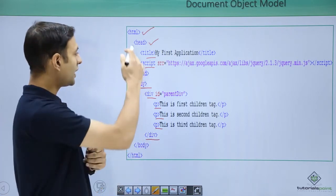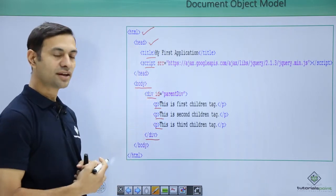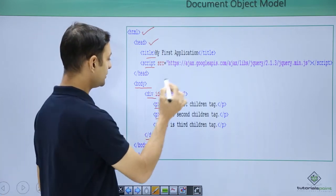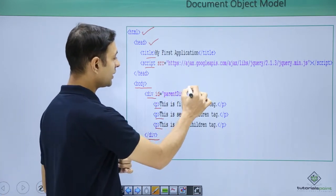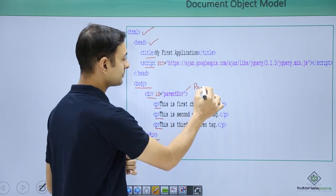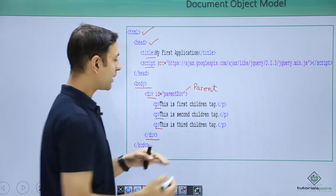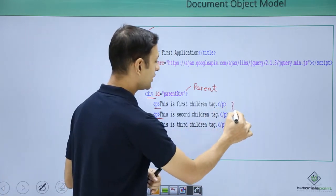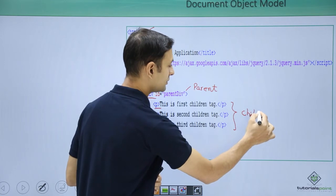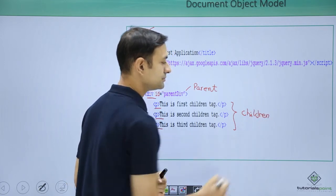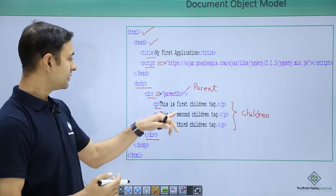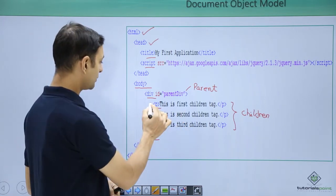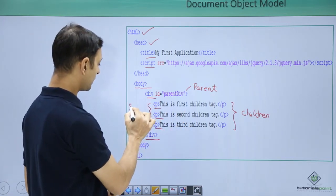So this is how a DOM is structured. Now there are various nomenclatures in DOM. Like this, if div is a parent here, and my paragraph tags are children, so here we can say these are children. Again, these paragraphs are siblings to each other. So these two are siblings.